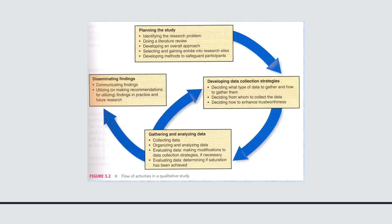Figure 3.2 does the same thing for qualitative research. You'll notice the quantitative process is fairly linear and goes in a straight path, whereas the qualitative process is more circular. You start with planning the study and identifying your problems, doing your literature review, and your overall approach. You get entree into the research sites, develop methods and safeguards for patients, develop data collection strategies, and then gather and analyze data. In qualitative research, you may at times have to go back to developing and adjusting your data collection strategies. In the end, it all ends with dissemination of the findings.